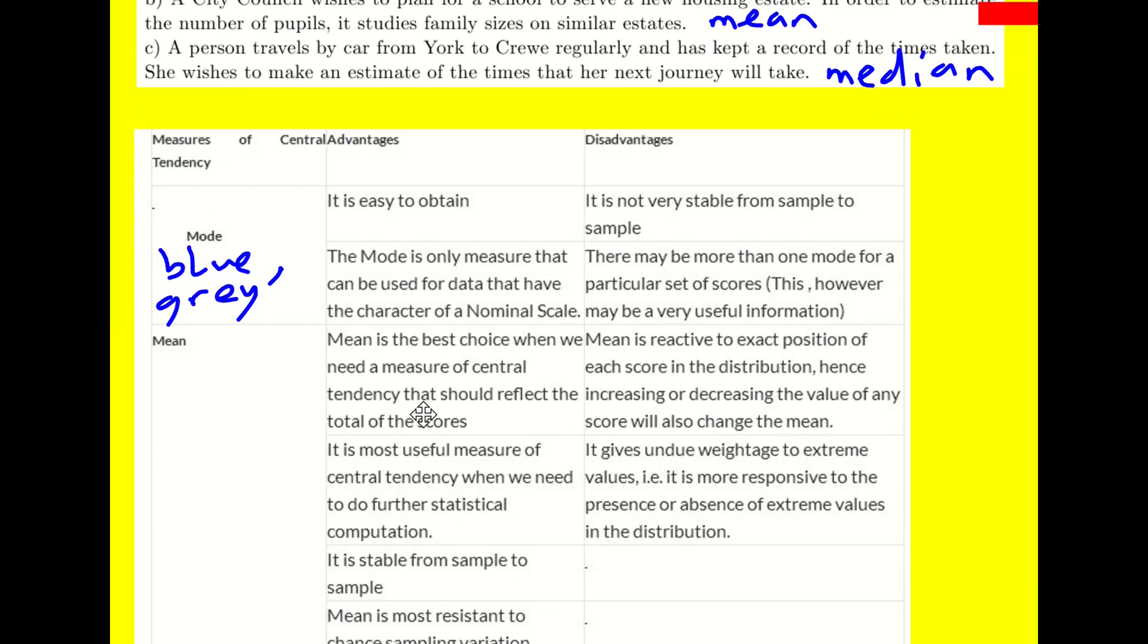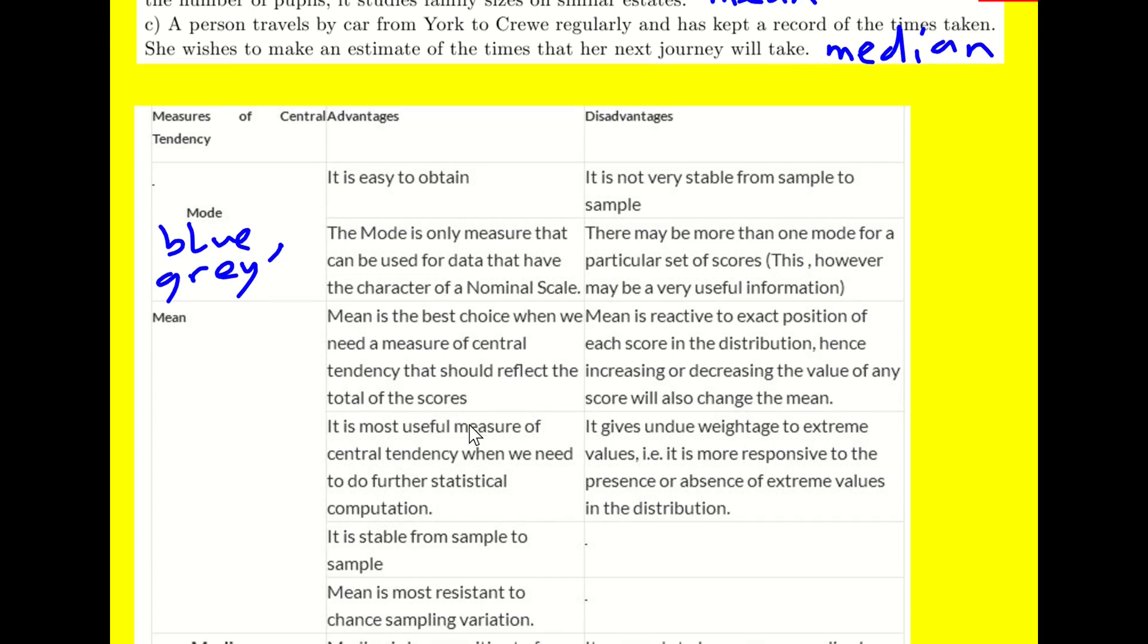The mean is really good when you want to have a central tendency measure that reflects the total of the scores. So when you want to include every single value, because the median and the mode don't do that. And if you want to do further statistical computation, which we will be doing, it turns out to be really useful as well.